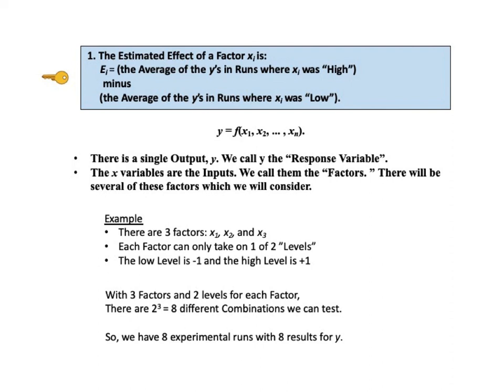There will be several of these factors which we will consider. Sometimes A, B, C, etc. are used instead of X1, X2, X3 to denote the factors. In a simple example of two levels, low and high, and three factors, X sub i, X sub i, and X sub i, how many different combinations can we test? The answer is 2 to the power of 3, that is 8. So, without repeating a combination, we can have eight experimental runs with eight results for Y.